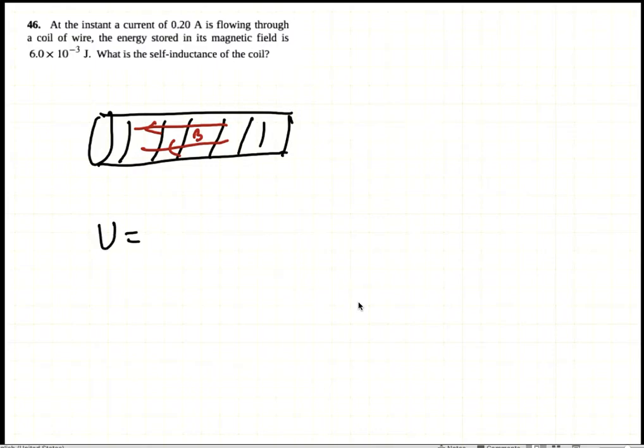The energy stored in the inductor is 1/2 LI squared. So L is 2U divided by I squared.